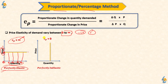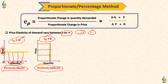The second case is when the demand curve is parallel to the Y-axis — this is perfectly inelastic demand. When the price is increasing or decreasing, the quantity does not change at all. The change in quantity is zero. So the price elasticity value is 0, meaning however much the price changes, demand does not respond. This is called perfectly inelastic demand.